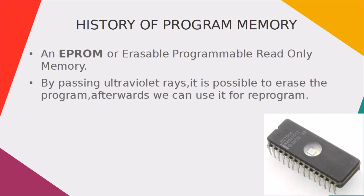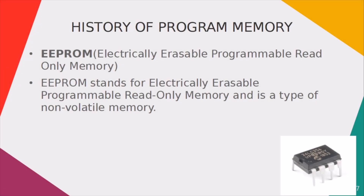The next thing we are going to see is EPROM, which stands for erasable programmable read-only memory. They provide the important feature of reprogramming by passing ultraviolet rays over it — we can reprogram this type of memory. After EPROM, EEPROM was released in the market, which stands for electrically erasable programmable read-only memory. It is also a type of non-volatile memory and provides a feature of reprogramming over 100,000 cycles.